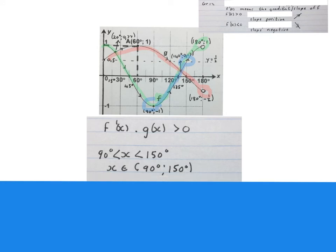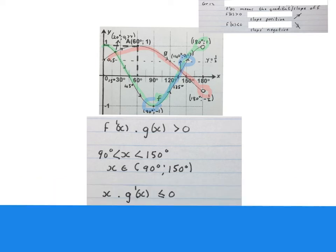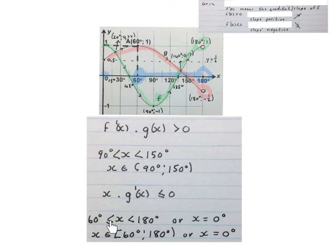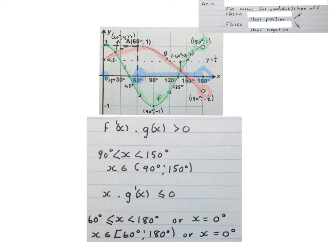The next question asks where is x times the gradient of g of x negative. The answer is x is bigger than 60 degrees and x is smaller than 180 degrees, or at x equals 0. You will have to stop the video and work this out yourself. In the blue area x is positive and the gradient of g is negative. Also at x equals zero that makes the multiplication equal to zero. At the turning point the gradient is zero — sort that out yourself.